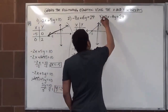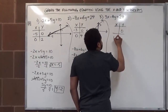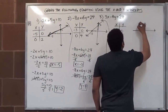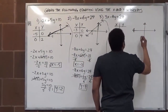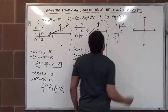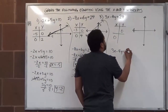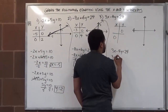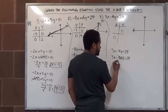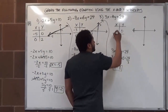Moving on to our third and final problem. We start with our x and y intercepts again — zero and zero in the table. We have three x minus four y equals twenty-four. We begin by substituting zero for y, which cancels the y term, leaving three x equals twenty-four. Dividing by three gives x equals eight. So our x intercept is eight, zero.